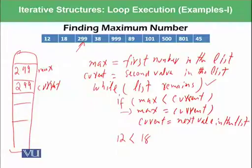And current is moving to next location which is 38. Then it is coming again. The condition of loop is correct. Then it is again checking if max is less than current. So 299 is less than 18, condition is false. So it is leaving this position. Then it is moving the current to the next value, which is 999.